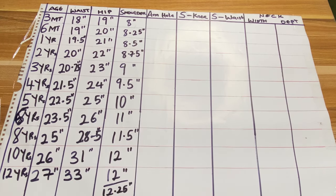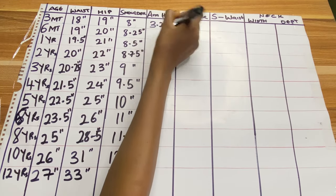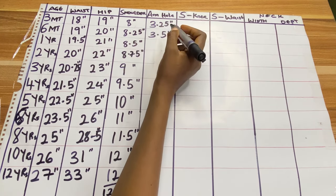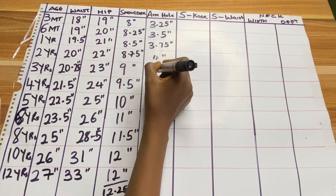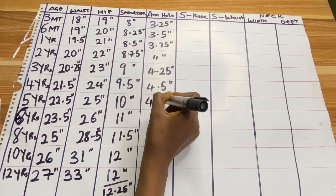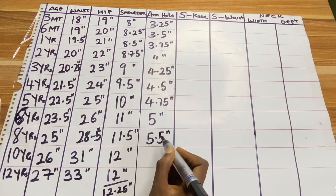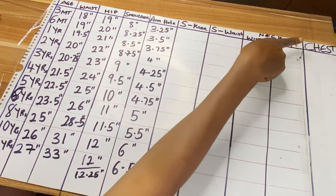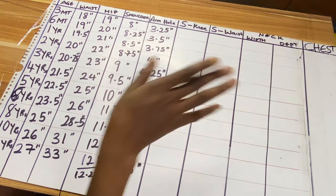The next measurement is armhole. For three months 3.25 inches, six months 3.5 inches, one year 3.75 inches, two years 4 inches, three years 4.25 inches, four years 4.5 inches, five years 4.75 inches, six years 5 inches, eight years 5.5 inches, ten years 6 inches, and twelve years 6.5 inches. I also added the chest measurement here which is very important.